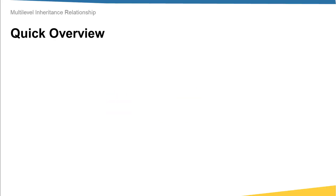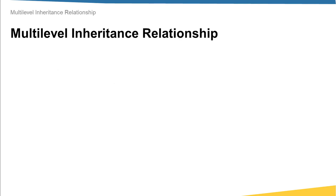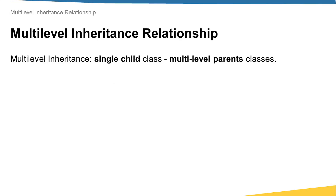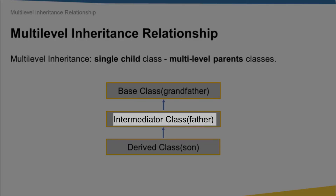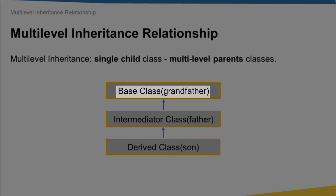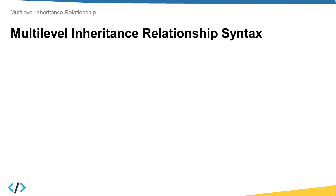In a previous lecture we saw that there are four types of inheritance relationships, and in this lecture we are mainly talking about the multi-level inheritance type. As a quick reminder, in this relationship we have a single child class and multi-level parent classes. Visually we represent this relationship with a diagram showing one son, one father, and one grandfather class.